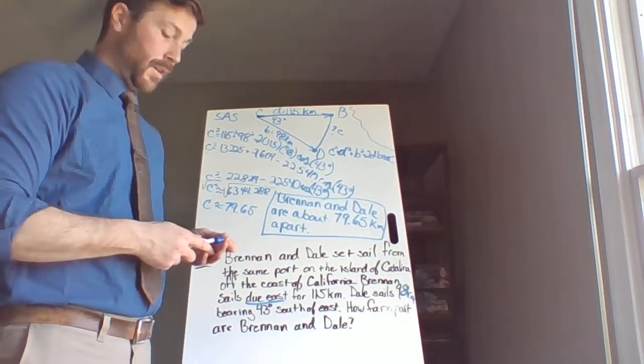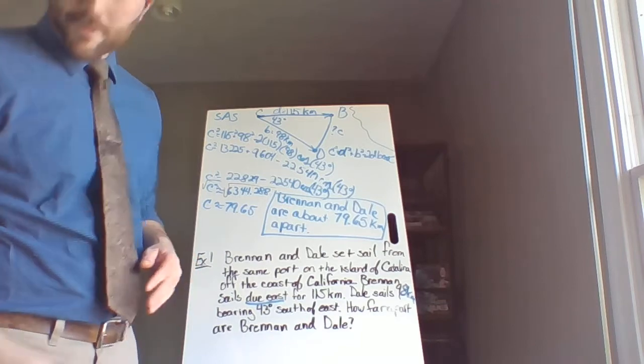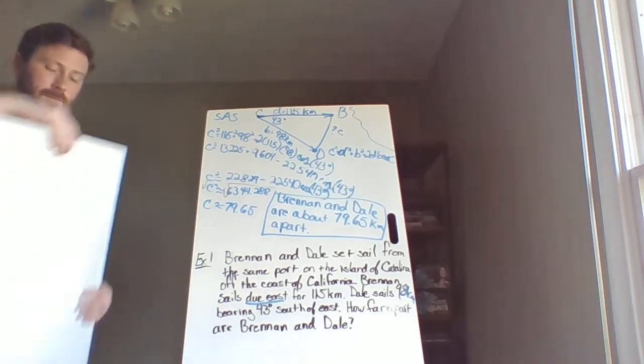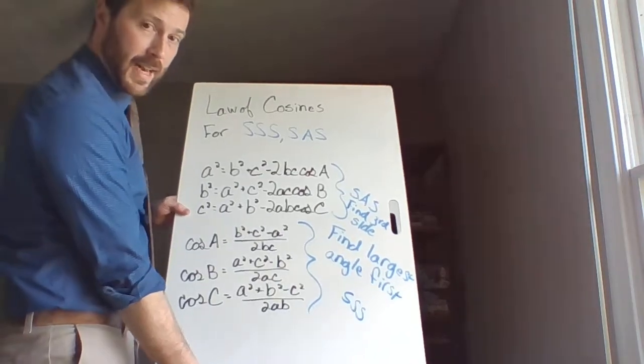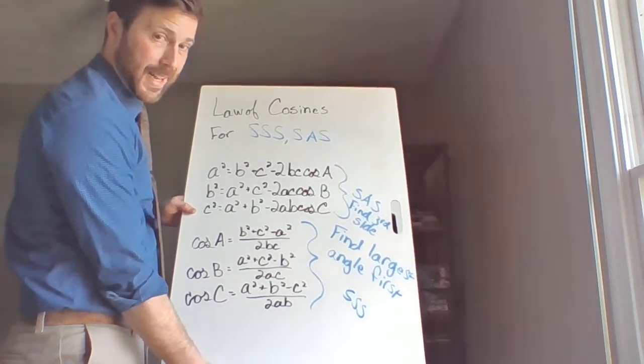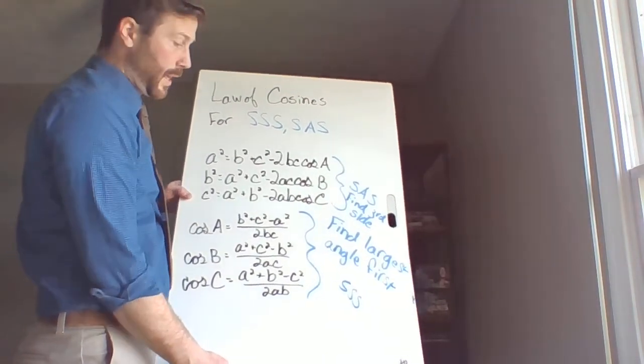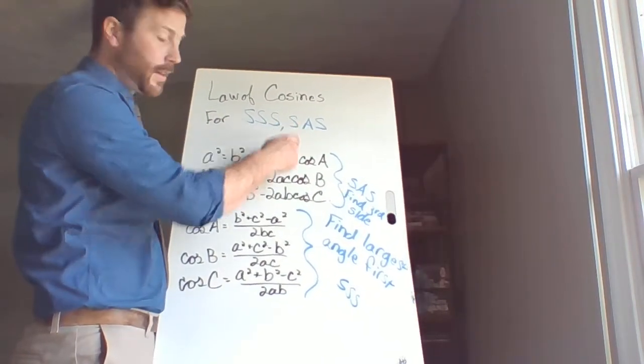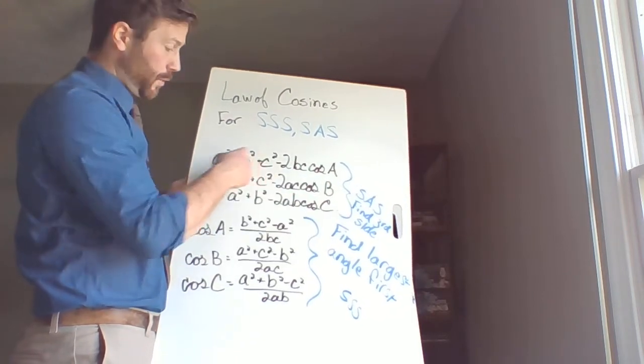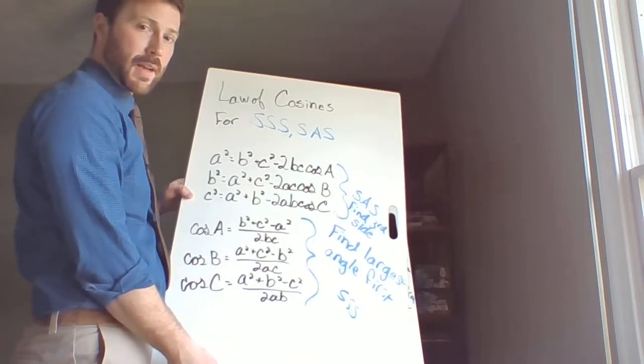And there we go. So if our information is of the form side, angle, side, or side, side, side, we can use law of cosines. Now, if we have side angle side, we want to find that third side first. We use one of these formulas to find that third side.